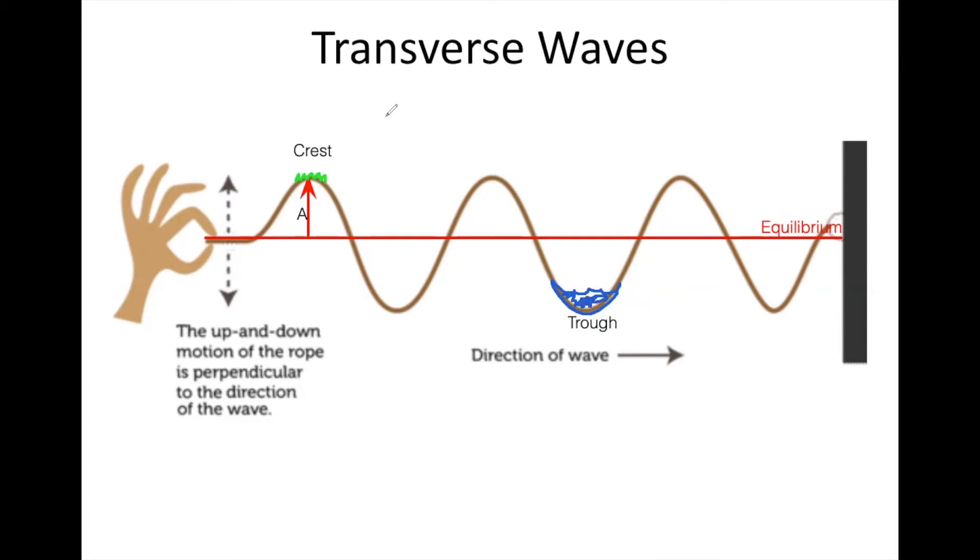But notice, whichever you pick, amplitude is still the distance between the equilibrium and the max extension. So you could measure amplitude from equilibrium to crest or equilibrium to trough, and it would still work the same way. Both of these measurements are equally length arrows, so both of these amplitudes, whether measured up or down for equilibrium, should be the same.